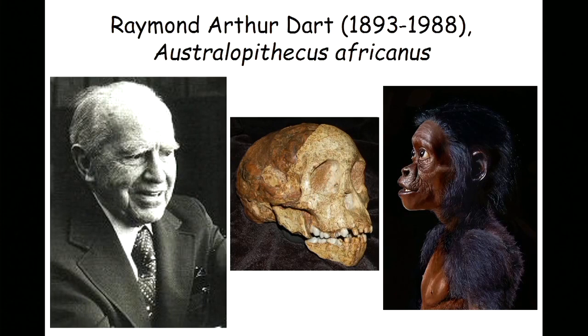Dart realized when he turned the skull upside down that the hole through which the spinal column goes — the foramen magnum — was central. So he knew this creature, which was transitional, walked on two legs. From his point of view, he had been banished, he had an incredibly exciting fossil, and he, through prescience, actually understood the significance of it.